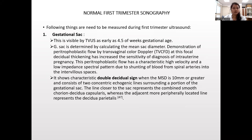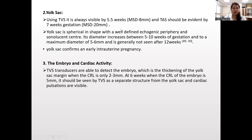Normal first trimester sonography shows a gestational sac which is visible by transvaginal ultrasound by four and a half weeks. It is determined by calculating mean SAC diameter and by showing peritrophoblastic flow. It shows a characteristic double decidual sign which is formed by decidua capsularis and decidua parietalis. The yolk sac is visible by five and a half weeks by TVS and TAS shows it by seven weeks. It is spherical in shape with a well-defined echogenic periphery and sonolucent center, confirming early uterine pregnancy.